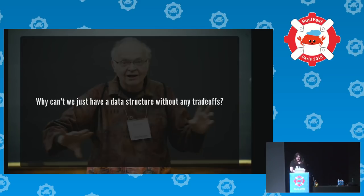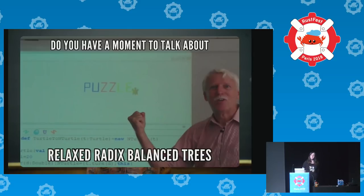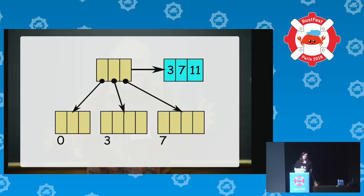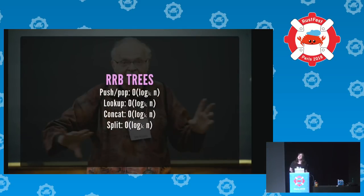Concatenation is still going to be slow with that vector. Bagwell's last contribution before he sadly passed away in 2012 was relaxed radix balance trees — a further development on Hickey's vector that allows a more relaxed tree structure. It uses size tables when necessary, so the tree shape is less constrained, and concatenation can be done by basically joining two trees with a new root. This is not actually in my library yet, but it's O(log n) across the board and should be really efficient.